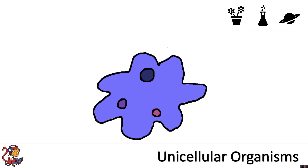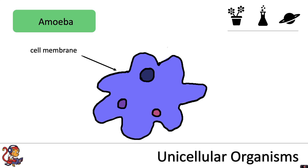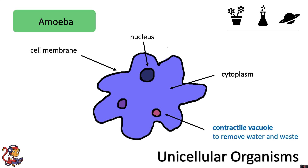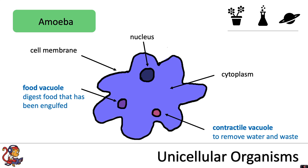The next single-celled organism is the amoeba. In similarity with animal and plant cells it has a cell membrane, a nucleus and cytoplasm. In addition it also has a contractile vacuole which removes water and waste, and it also has a food vacuole to digest food that has been engulfed.